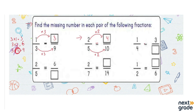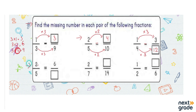Now look at this one. The denominator is missing and the numerator has gone from 1 to 3, which means 1 was multiplied by 3 to get 3. We do the same to the denominator and multiply it by 3 as well, because we multiply or divide with the same number. 3 fours are 12, so the answer is 12. The equivalent fraction is 3 over 12.